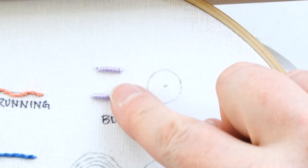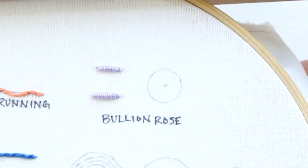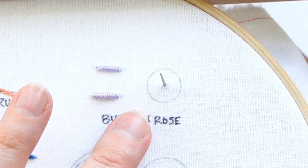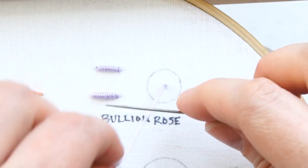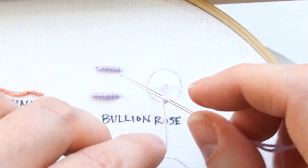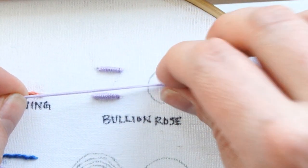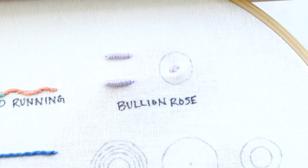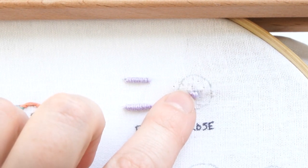Once you've got the hang of making bullion knots, we can start on the bullion knot rose. There are different ways to do it, but I like to start with a French knot in the middle. Bring your needle up through the back, wrap the thread around a couple times, and go back near that same hole.